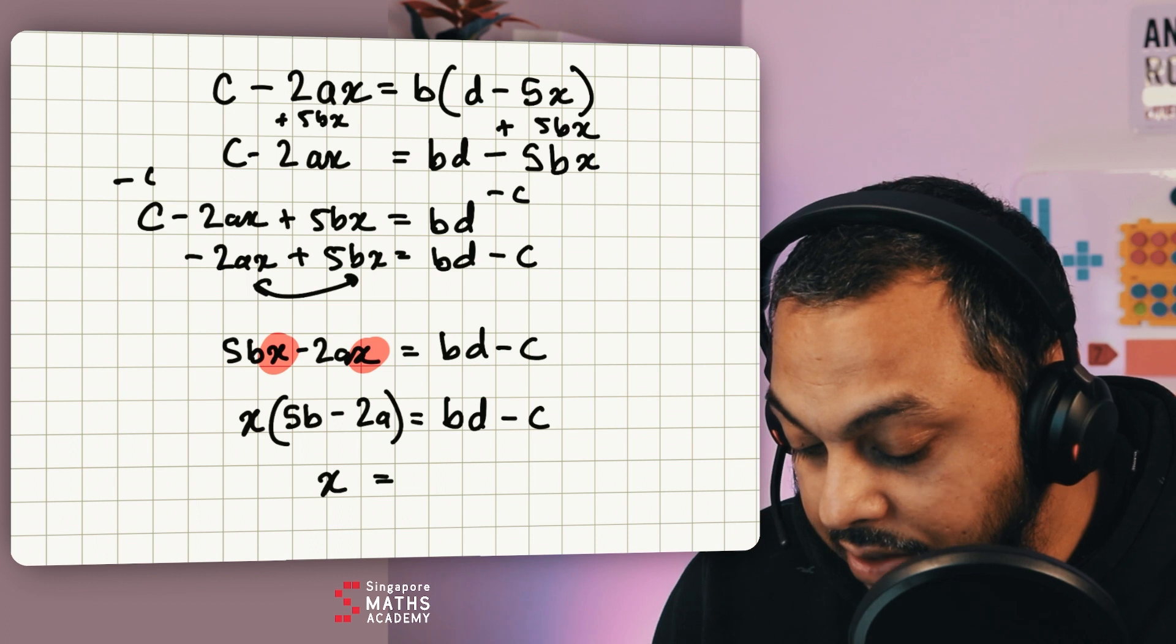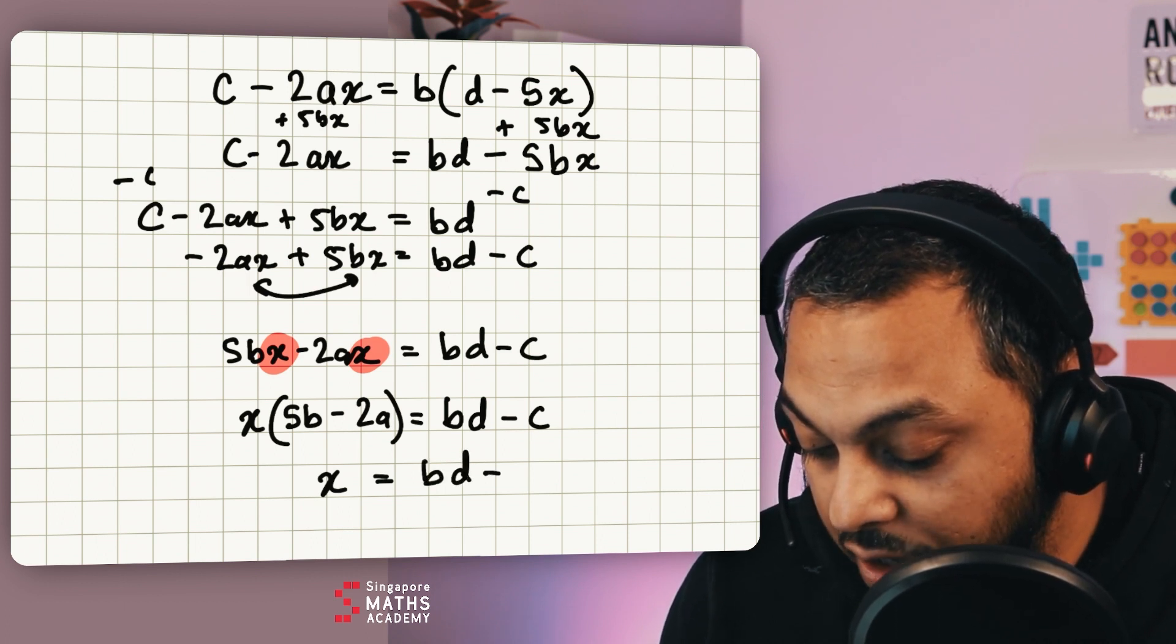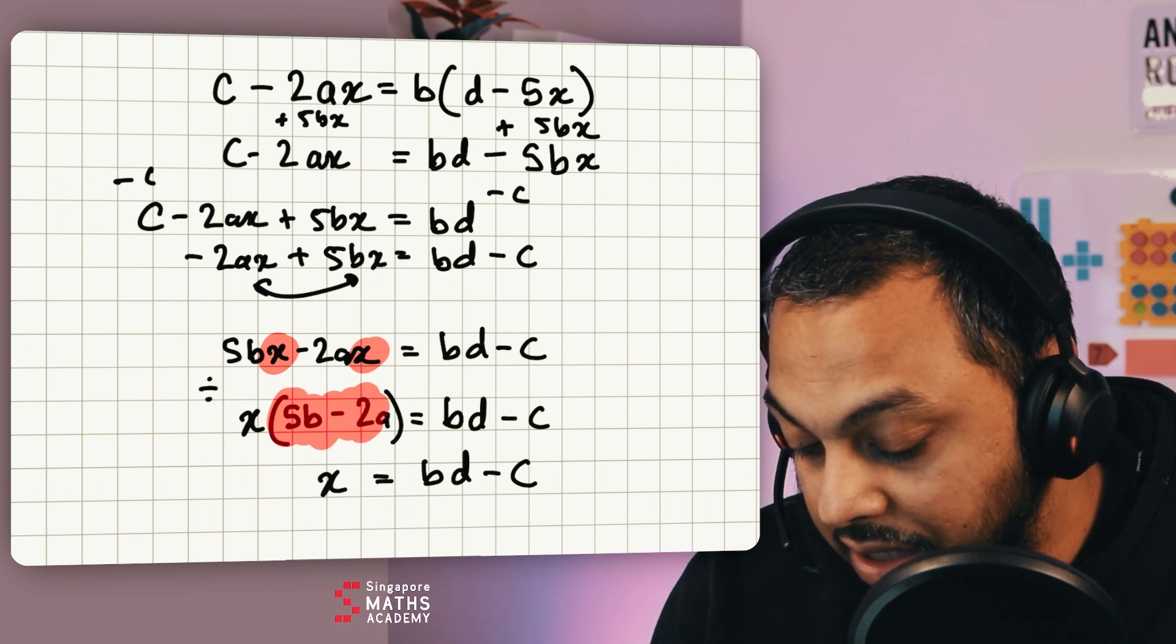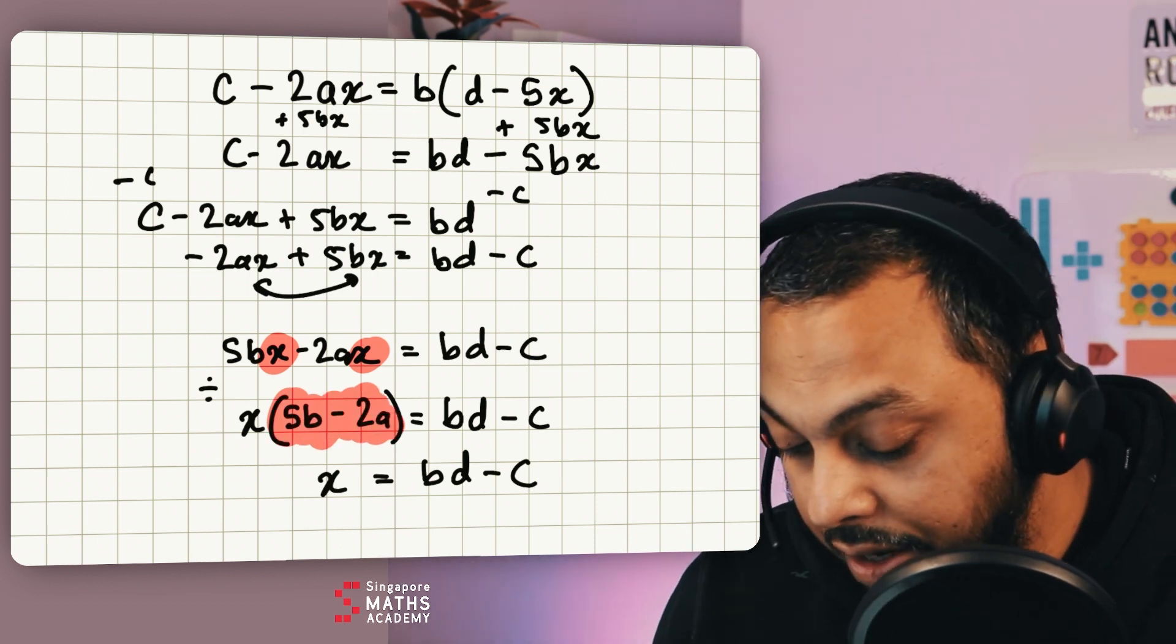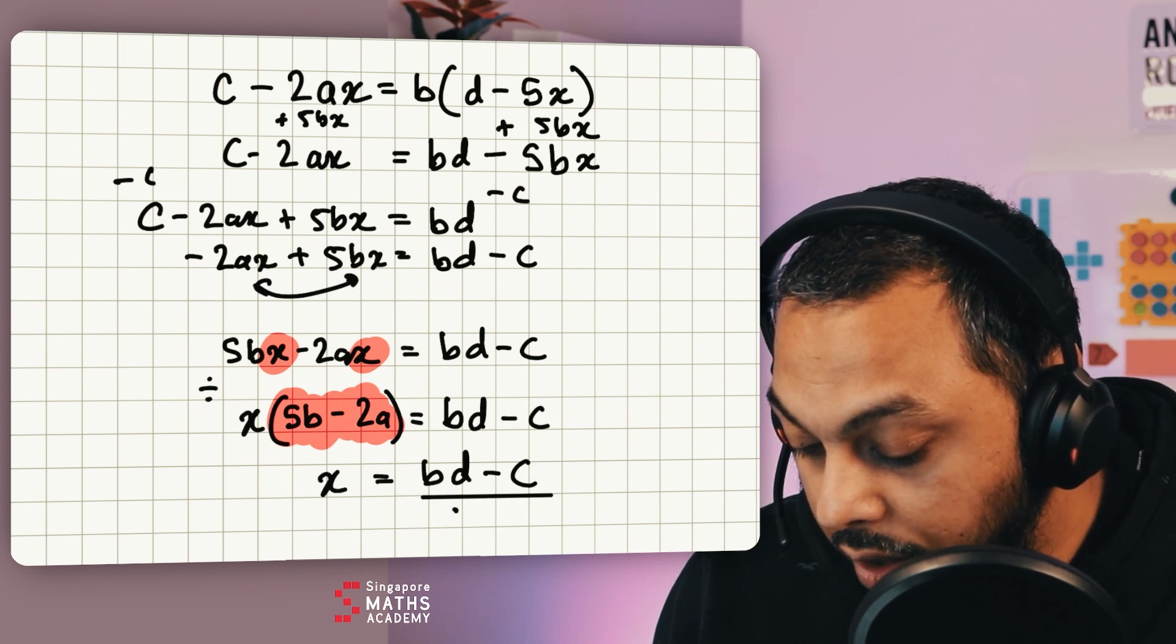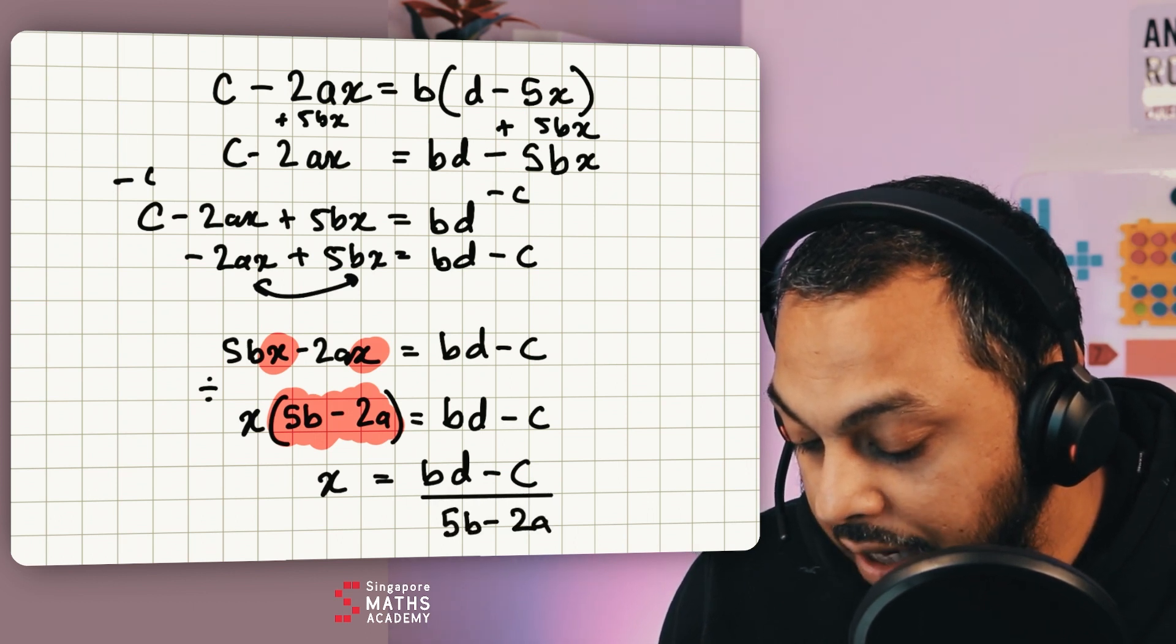And therefore x is equal to bd take away c. I'm going to divide both sides by this so I can get rid of it. So x is equal to bd take away c all over 5b take away 2a.